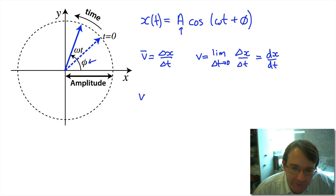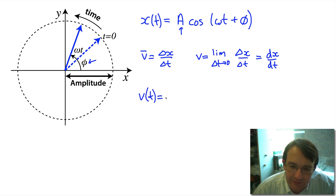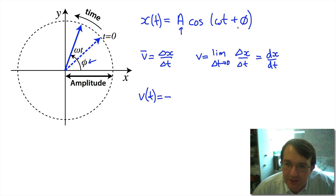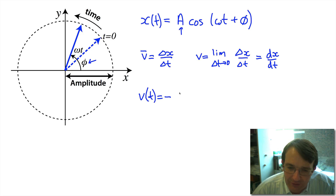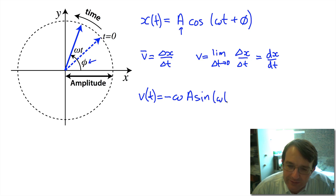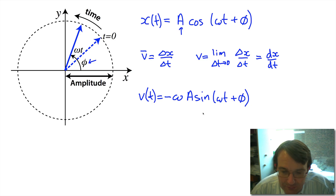The velocity as a function of time is obtained by differentiating the displacement. Cosine differentiates to minus sine, so we get a minus sign. Differentiating the argument of the cosine brings down a factor of omega, and phi is a constant so it contributes nothing. We get a factor of omega out front, and then sine of (omega t plus phi). So now we have a mathematical expression for the velocity as a function of time.